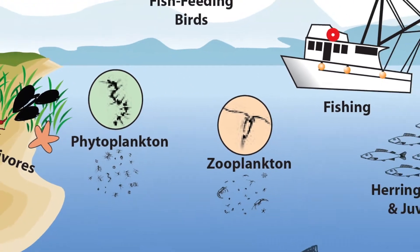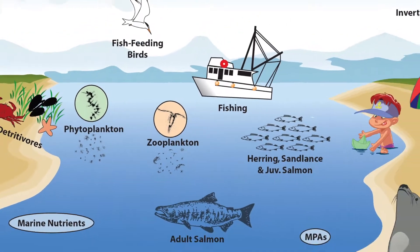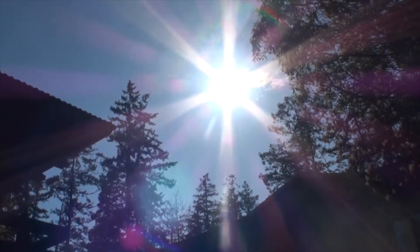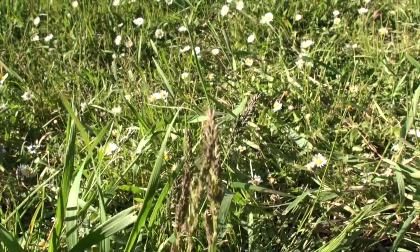Phytoplankton are the ocean's primary producers, single-celled algae at the bottom of the food chain that photosynthesize using the sun's energy just like plants on land.